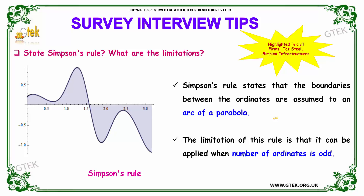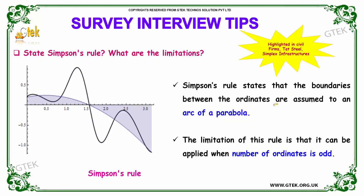Our next question is: state Simpson's rule and its limitations. Simpson's rule states that the boundaries between the ordinates are assumed to be an arc of a parabola. The limitation of this rule is that it can only be applied when the number of ordinates is odd.